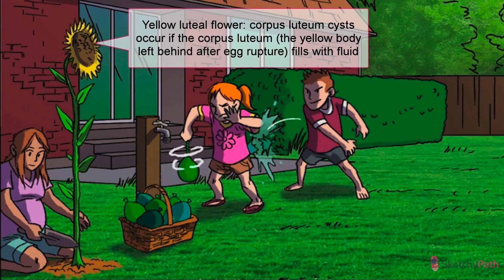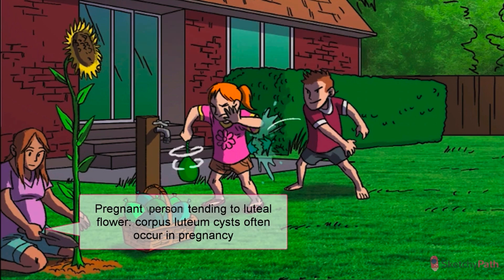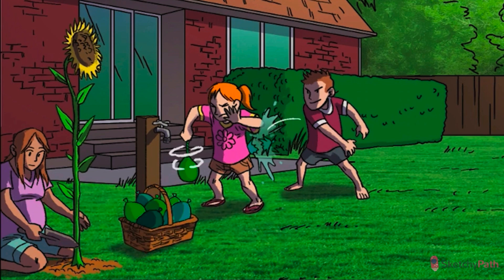It turns out that the corpus luteum may form a cyst. In fact, it's the most common ovarian cyst found in pregnant persons. In early pregnancy, the corpus enlarges, and when fluid accumulates in the enlarging corpus luteum, a cyst forms. Fortunately, the majority of corpus luteum cysts regress spontaneously as the pregnancy progresses. Like follicular cysts, they can also cause significant pain if they grow large enough or rupture.